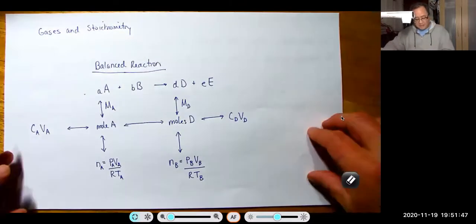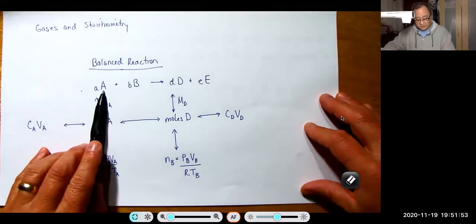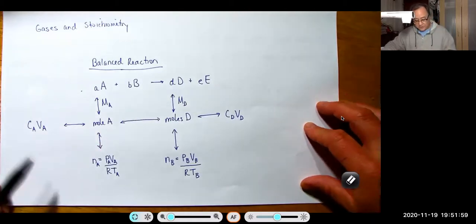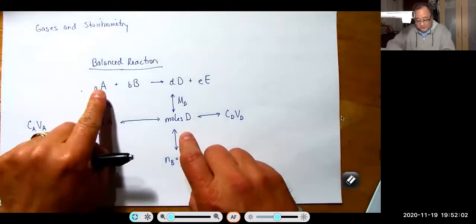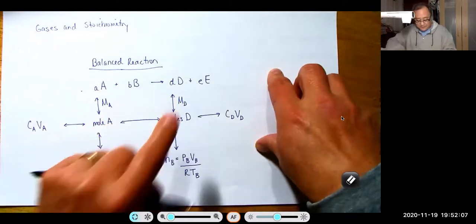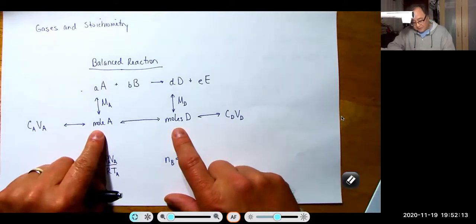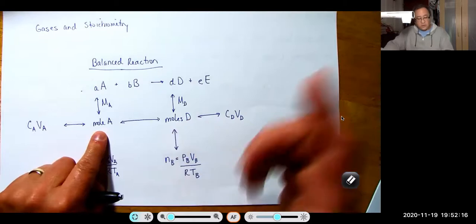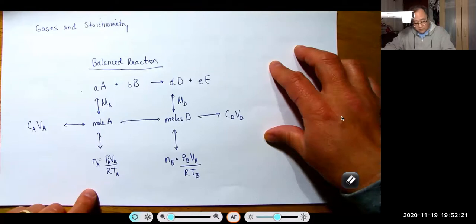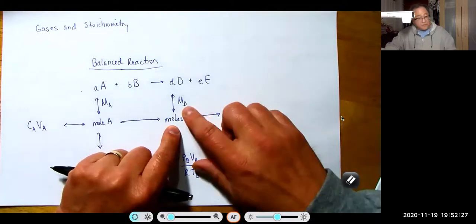So here we have a balanced reaction. A moles of A reacts with B moles of B to give you D moles of D and E moles of E. Remember, the key to going between one substance and another, regardless of whether it's A to D, A to B, B to D or whatever, the key is that we need moles of A to get moles of D or vice versa. We learned first that you can get moles of A using the molar mass of A if you start with the mass of A.